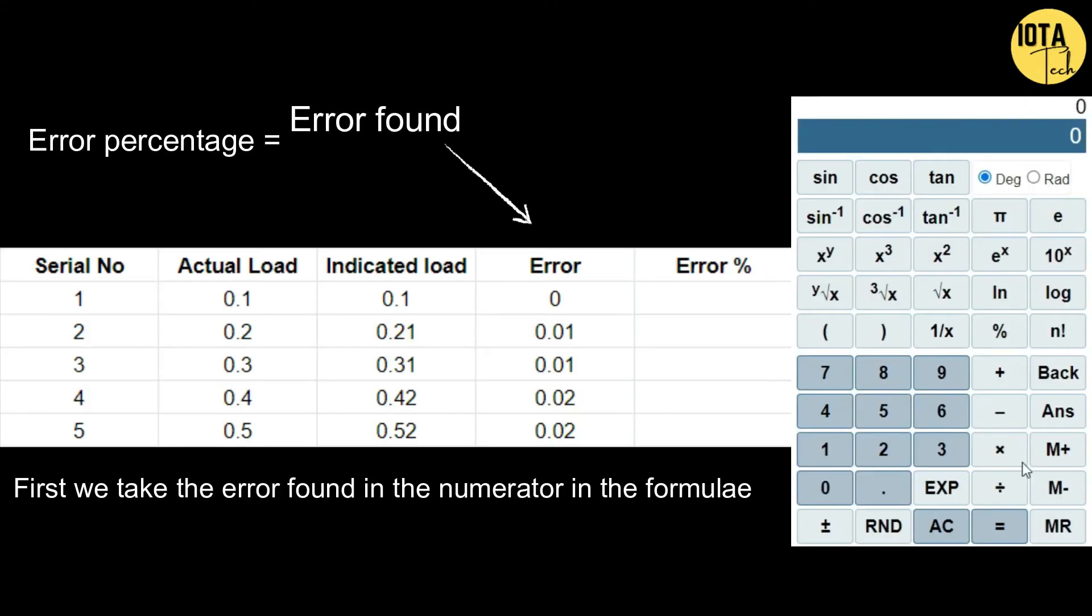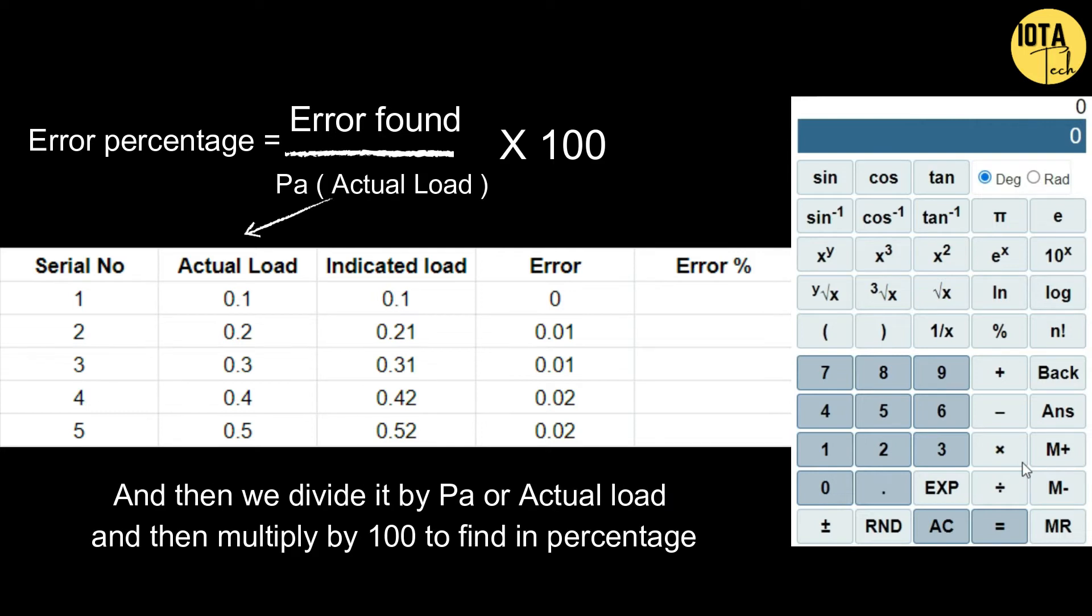In this formula first we take the error found in the numerator and then we divide it by PA or actual load and then multiply by 100 to find the value in percentage.